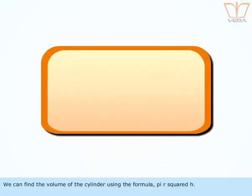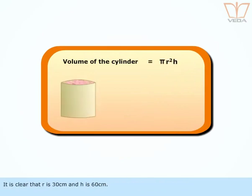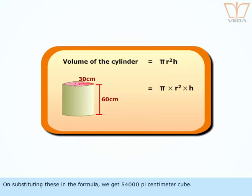We can find the volume of the cylinder using the formula π r² h. It is clear that r is 30 cm and h is 60 cm. On substituting these in the formula, we get 54,000π cm³.